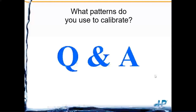Question: what patterns do you use to calibrate? Not sure what is meant by 'patterns.' If you're asking about calibration order when using a combination sensor measuring both pH and ORP simultaneously, the recommendation is to do the pH calibration first, then do the one-point ORP calibration.